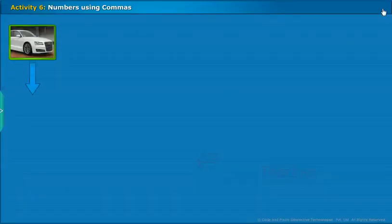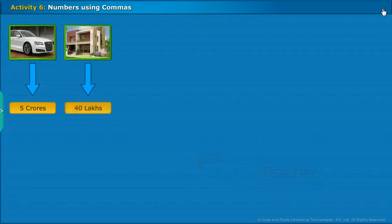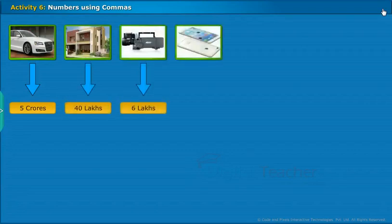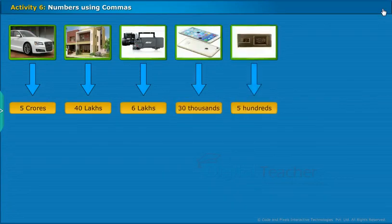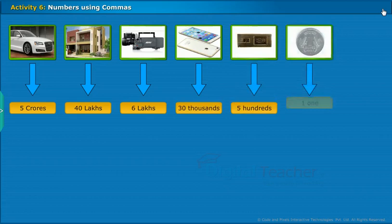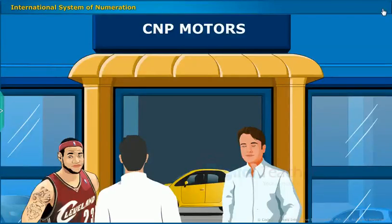Let us perform an activity to convert the number names to figures and place commas in proper positions. The cost of each item is displayed on the screen. Convert the number names into numericals and place commas in proper places. Then sum up. Till now, we have learnt about Indian system of numeration. Now, we are going to discuss about international system of numeration.